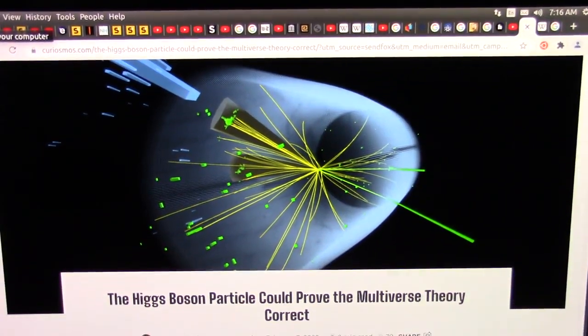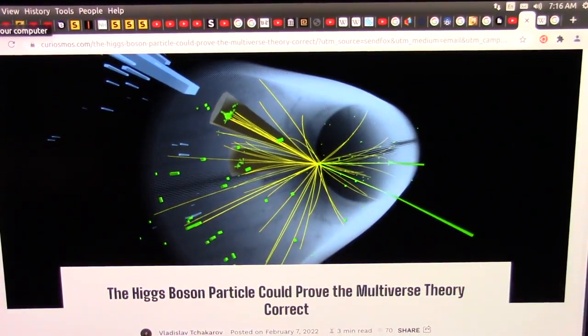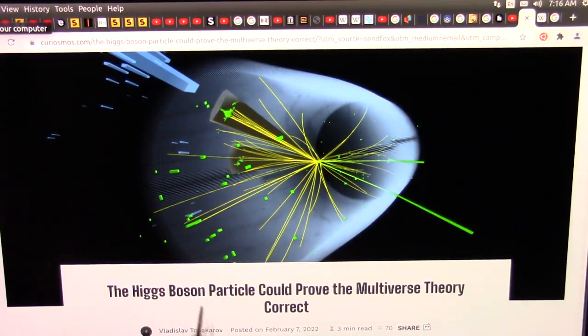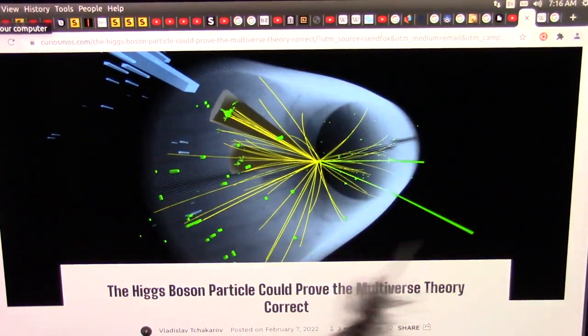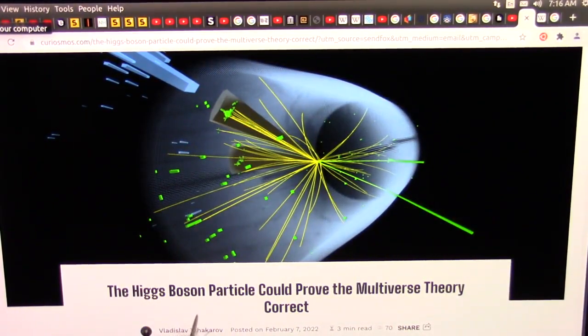Okay, once again my friends, this is absolutely amazing. The Higgs boson particle could prove the multiverse theory correct. This is February 7th, 2022, only a couple of days ago. The Higgs boson could prove the multiverse theory correct. This is amazing.